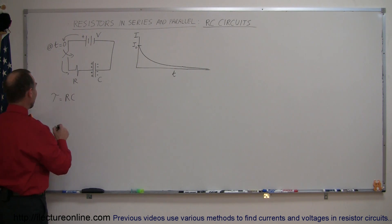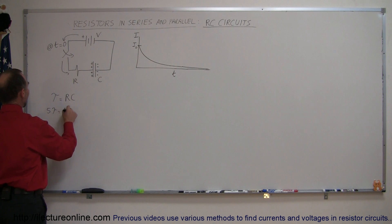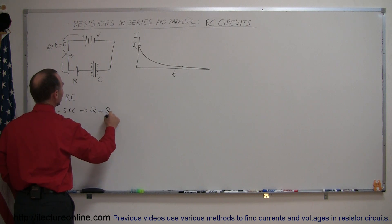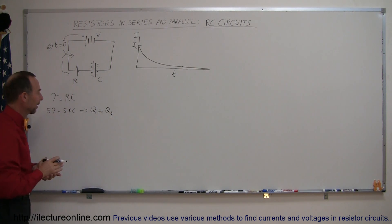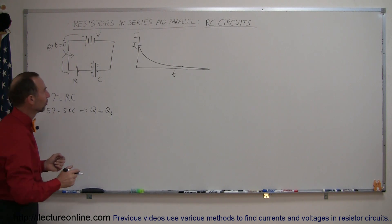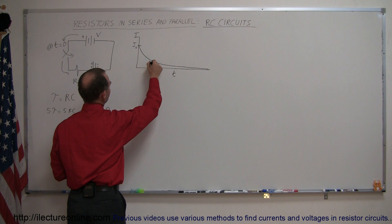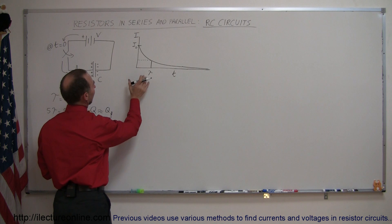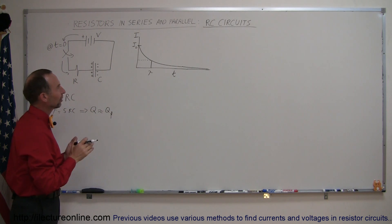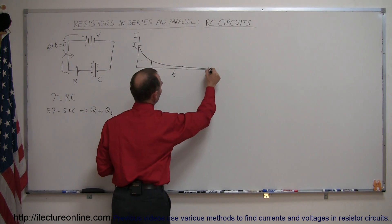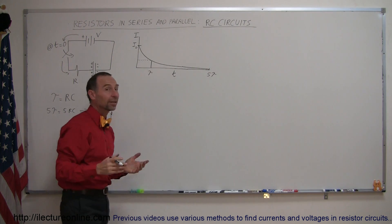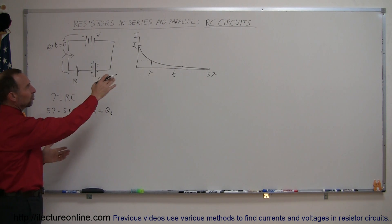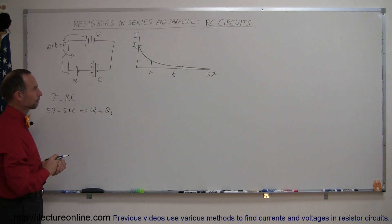It is commonly said that the time constant is the time it takes for the capacitor to charge to about 63% of its final value, and after five time constants — five times R times C — the charge q is approximately equal to q final. In other words, you have pretty well filled up your capacitor with charge. After one time constant the capacitor is 63% charged, and after five time constants the capacitor is fully charged for all intended purposes.